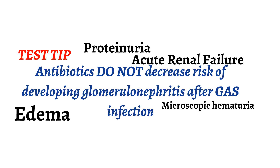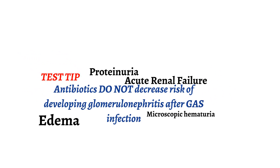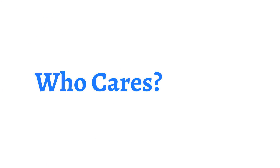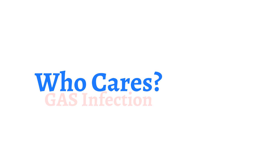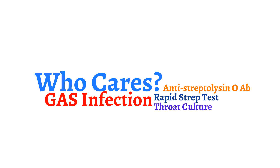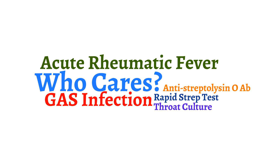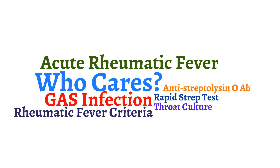Now that we have talked about group A pharyngitis, why is it so important to identify and treat group A strep pharyngitis? As we mentioned before, group A strep pharyngitis, if untreated, can lead to acute rheumatic fever. Rheumatic fever is seen in patients with a previous group A streptococcal infection. The presence of a group A strep infection must be demonstrated by a rapid strep test, throat culture, or antistreptolysin O antibodies. Antistreptolysin O antibody is an antibody produced by the body against an exotoxin produced by most strains of group A strep and indicates a previous group A strep infection.